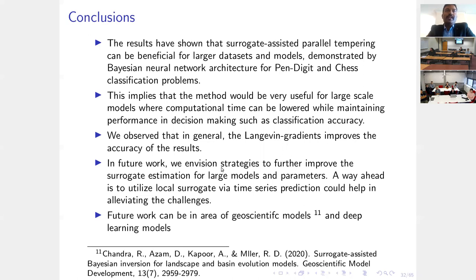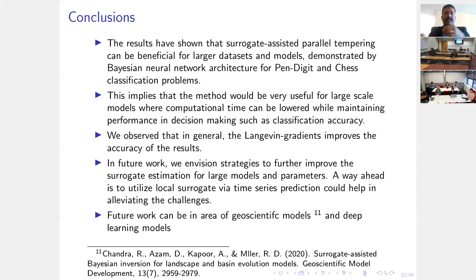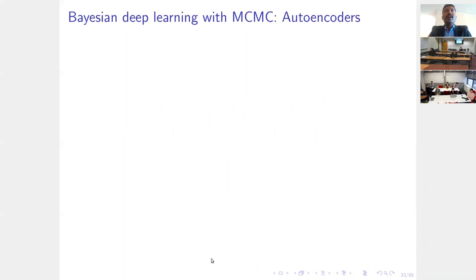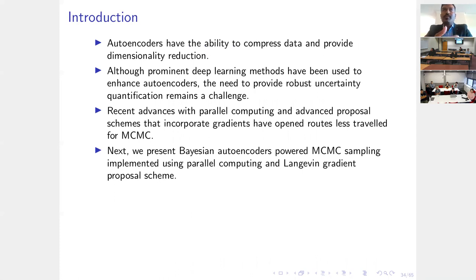Langevin gradients do improve the accuracy of results. In future work we applied this to geoscientific models — specifically a landscape evolution model where we look at millions of years of Earth's geological and topographic history, simulating how mountains eroded and formed sediments. Now moving to work from last year: applying the same framework to deep learning models. The first deep learning model is an autoencoder.